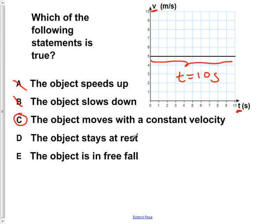D states that the object stays at rest. Well, we know this is not true. Because at all times between 0 and 10 seconds, our object has a velocity of 5 meters per second. So it is not stationary. Its velocity is not 0. So that's why D is wrong.